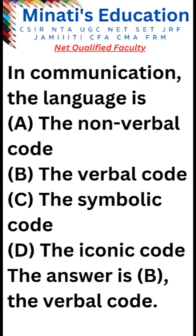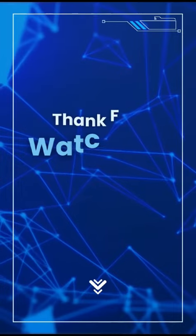Symbolic codes are used to represent something else, such as traffic signs or emojis. Iconic codes are used to represent something visually, such as a map or a diagram. In communication, language is a verbal code that we use to convey our thoughts, ideas, and feelings to others. Thanks for watching.